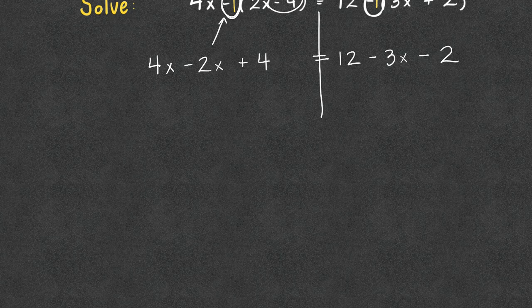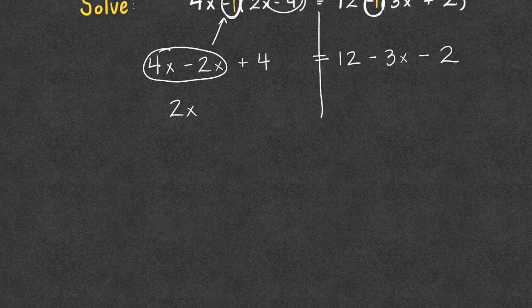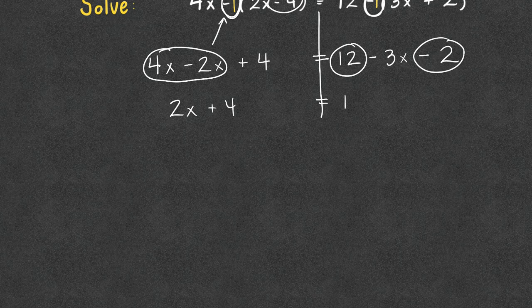All right, so we're going to clean up the left side, clean up the right side, and by clean up, we mean combine like terms. So in this case, I can combine 4x minus 2x, which gives us 2x plus 4 equals, we have 12 minus 2, which gives us 10 minus 3x, because 12 minus 2 was 10.